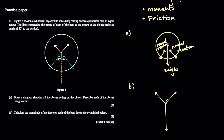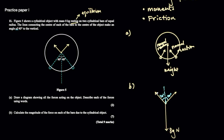We know the angles of these vectors. If we draw a vertical line, these angles are 40 degrees to the vertical. We also know the weight, which is 8 kilograms times g newtons. The other thing we know is that this is in equilibrium — the word equilibrium is not used in the question but the word 'resting' is. Resting implies equilibrium: if something is at rest it's not moving, so we can assume equilibrium.